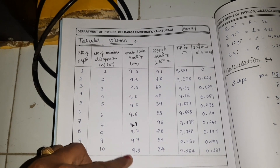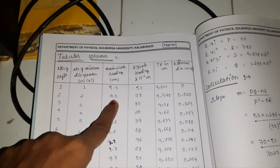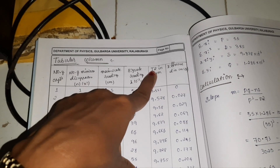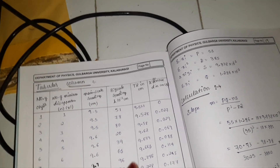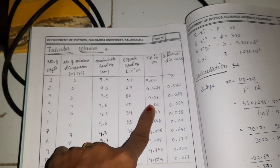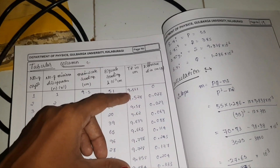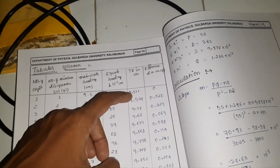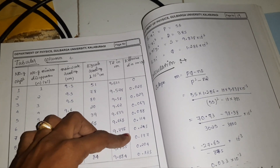Repeat the same procedure for other disappearances of minimal fringes. Then calculate the total reading using the main scale reading, vernier scale reading, and the least count of the Michelson interferometer. Subtract the remaining values from the first reading to get the difference.